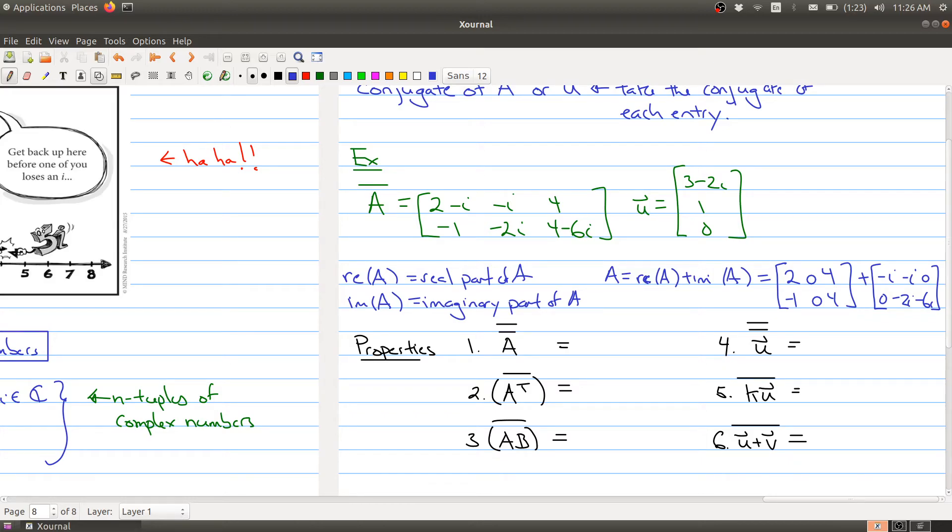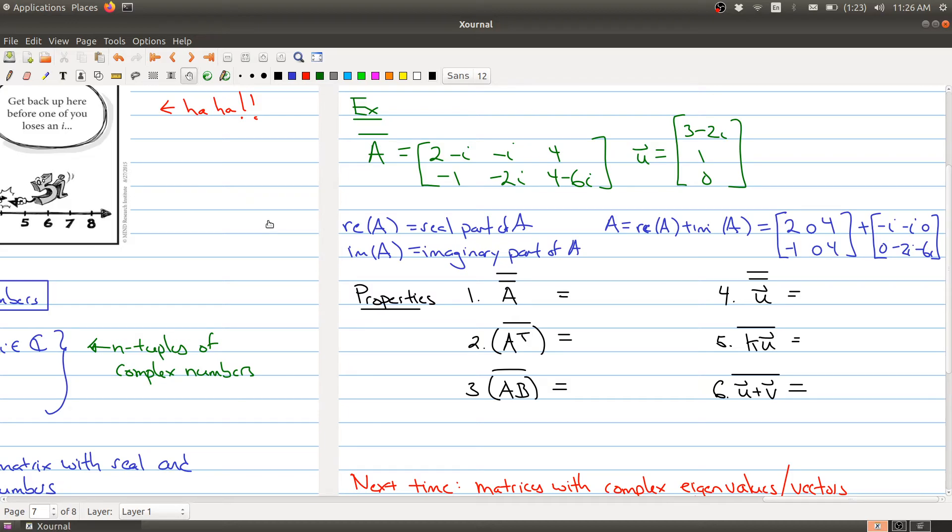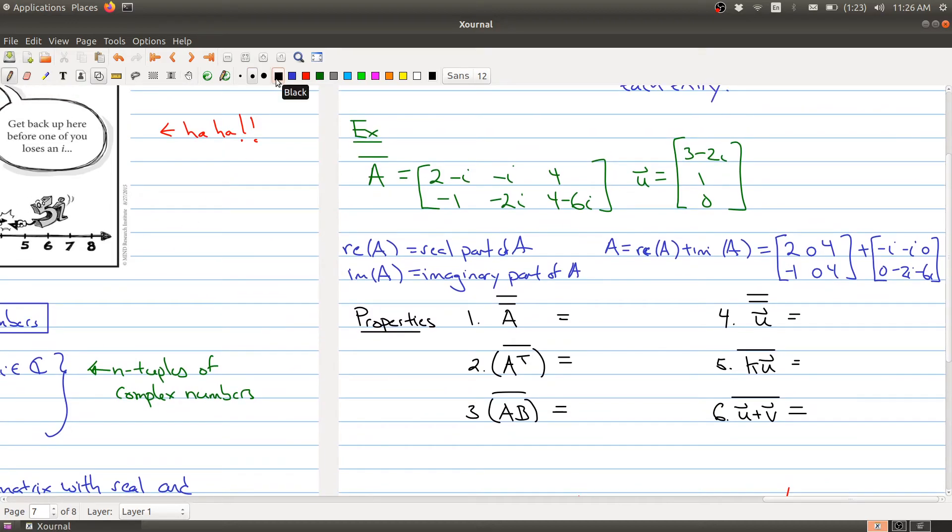And the last thing I wanted to mention today is what are some of the properties of the conjugate, both on matrices and on vectors. So if you take a matrix A and you take its conjugate and you take its conjugate again, you should get the matrix A back. If you first take the transpose of the matrix and take its conjugate, it's the same thing as taking the conjugate of the matrix and then taking the transpose. And multiplication works nice that you can either multiply and then take the transpose, or you could take the transpose of each matrix and multiply.